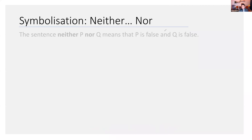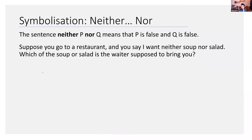Let's consider the 'neither nor' again. It means that both atomics are false. Here's one way of remembering it: suppose you go to a restaurant and you tell the waiter, 'I want neither soup nor salad.' And let's say that the waiter brings you soup — did he do what you want? He said 'I want neither soup nor salad' and he brought you soup, so he didn't do what you want.